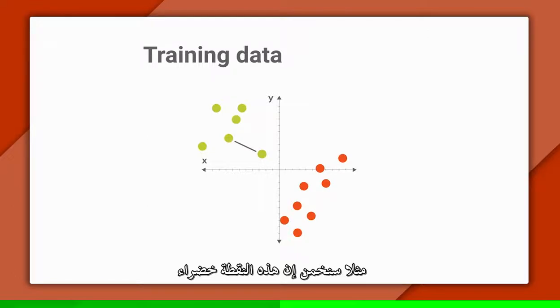For example, we'll guess that this testing dot is green, because that's the color of its nearest neighbor. As another example, if we had a testing dot over here, we'd guess that it's red.